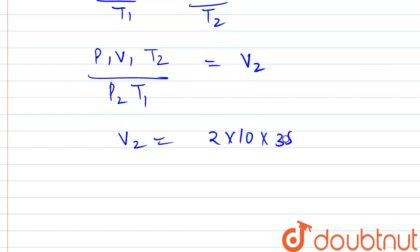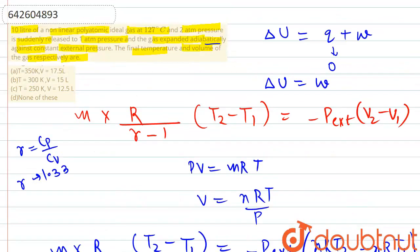V2 from here will be 17.5 liters. If we go above and see the option, then temperature 350 Kelvin, volume 17.5 liter, is option A, which is the correct answer.